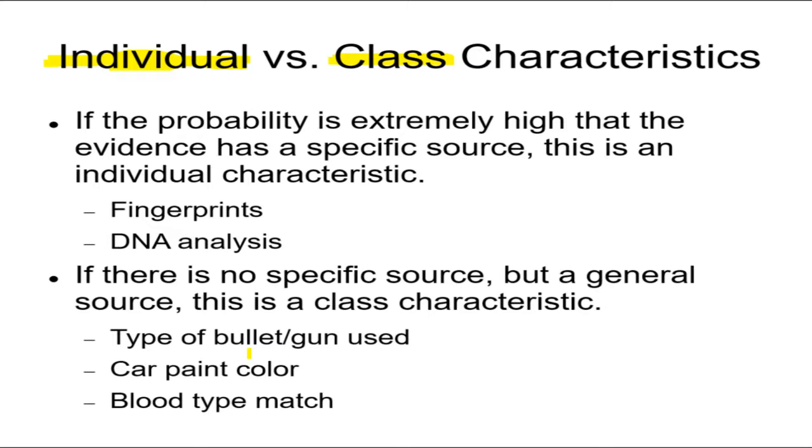So you can narrow it down. If the suspect has that kind of gun, that doesn't mean he's the only one. There's a probability. If this is like a rare gun, then it's a high probability. If it's a common enough gun that's found, then it's a low probability that he is the one. It will narrow down things. It's a class characteristic, not an individual characteristic, because it narrows it down to a certain class.